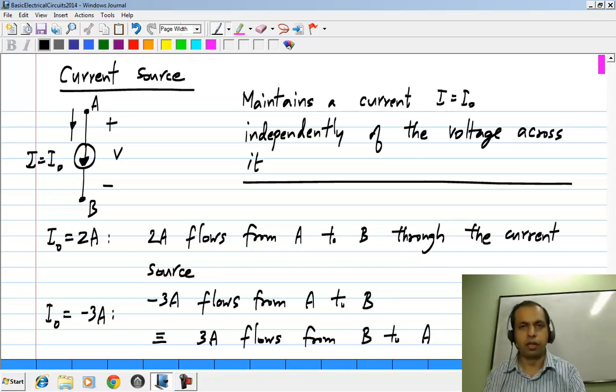All that a current source does is to maintain a flow of current regardless of what voltage is across it.